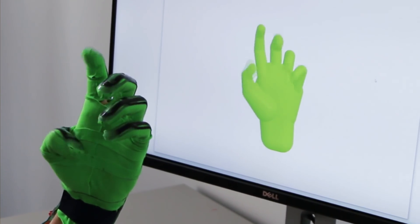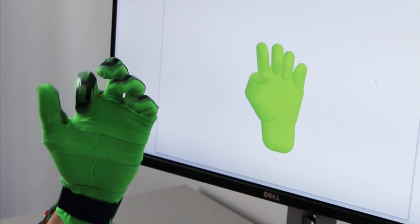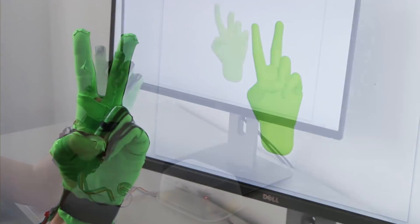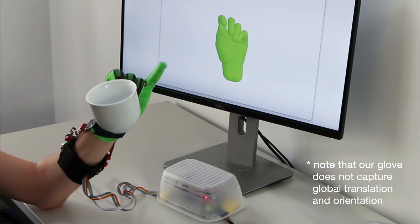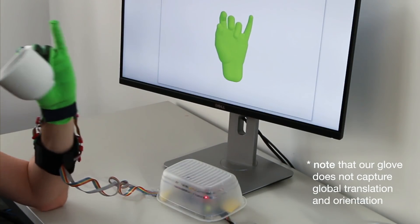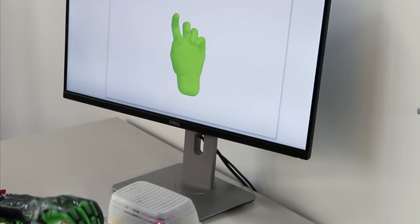Our glove successfully captures hand poses in situations where camera based trackers fail. For example, when occlusion occurs due to object manipulations, body occlusion, self occlusion, or the hand moving out of field of view.